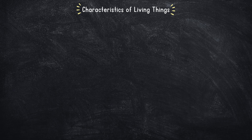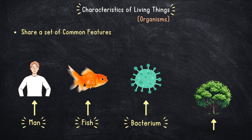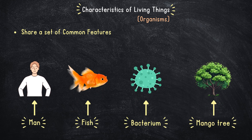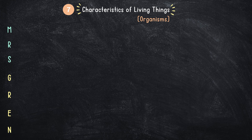Living things, often called organisms, share a set of common features. Whether it's a man, a fish, a bacterium, or a mango tree, all have these common characteristics which set them apart from non-living things. There are seven common characteristics, and Mrs. Grenn will help us understand these.